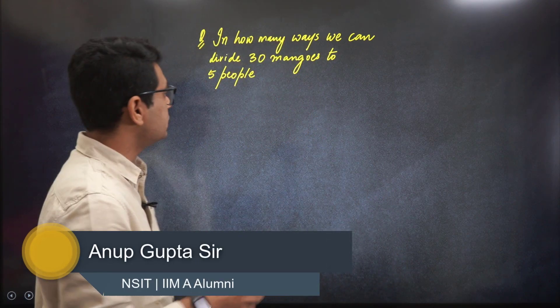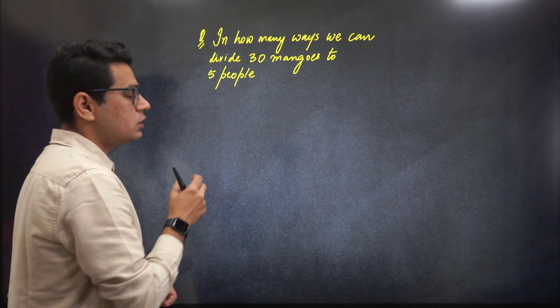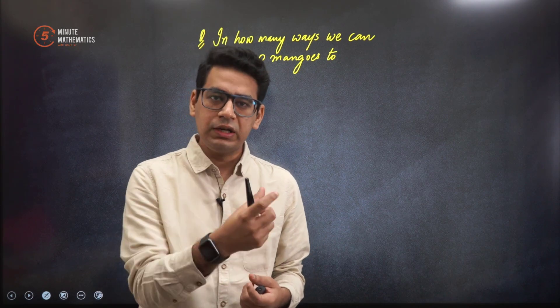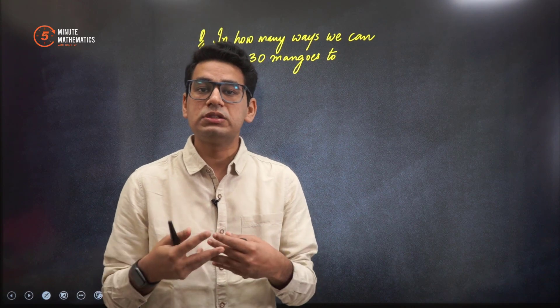The question we have at hand is: in how many ways can we divide 30 mangoes to 5 people? A very generic day-to-day usage problem. 30 mangoes are there, we have to give them to 5 people. In how many ways can this be done?